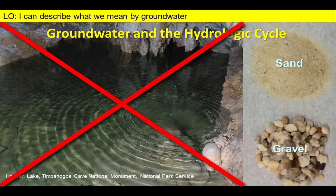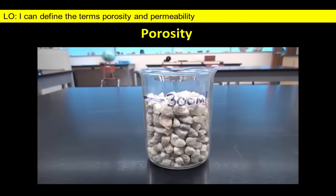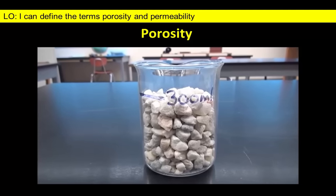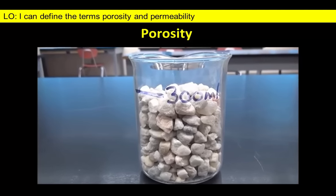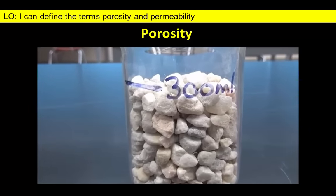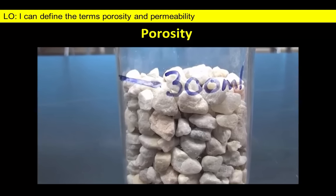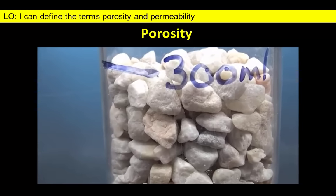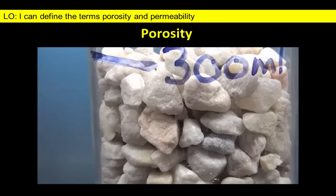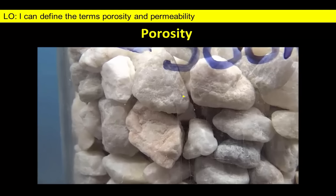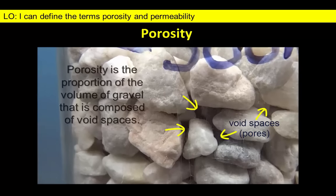We will consider each of these separately, starting with porosity. We filled this beaker with about 300 milliliters of relatively unsorted gravel. Notice that there are grains of different sizes that loosely fill the container, leaving several visible open spaces. These spaces represent the porosity of the sediment.